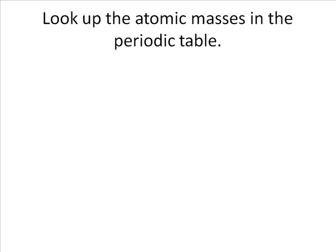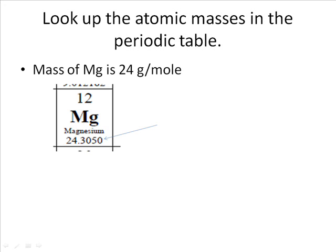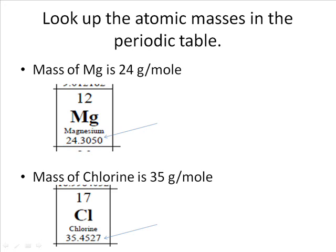When you look in the periodic table, the mass of Magnesium is 24 grams per mole, as shown in the number that is below the symbol. The mass has a decimal. The mass of Chlorine is 35 grams per mole, as is shown in the number below the symbol. Remember, the mass will have a decimal.